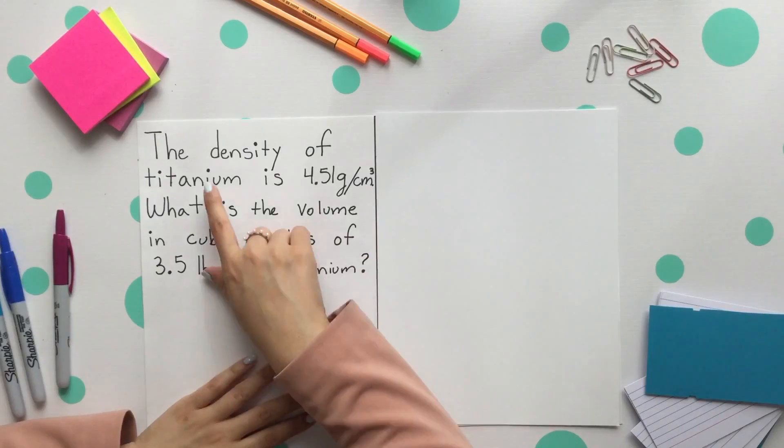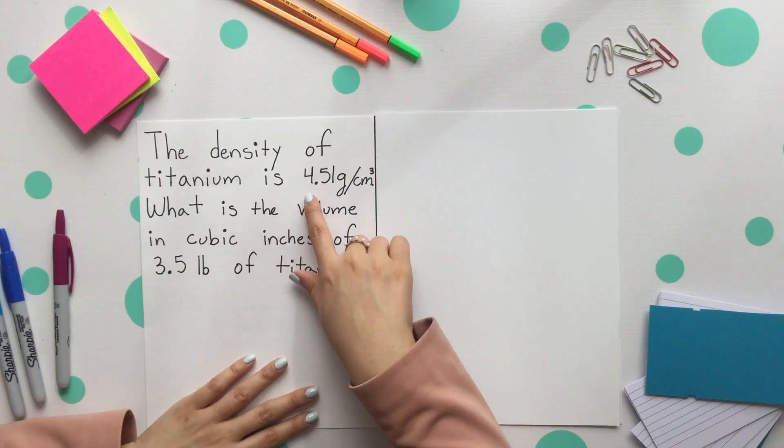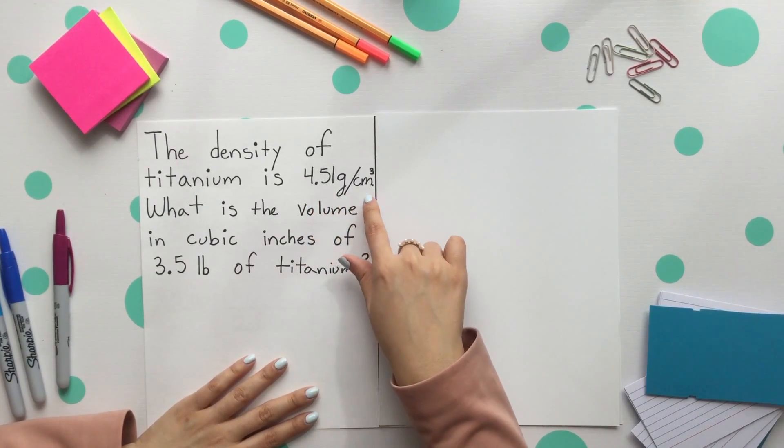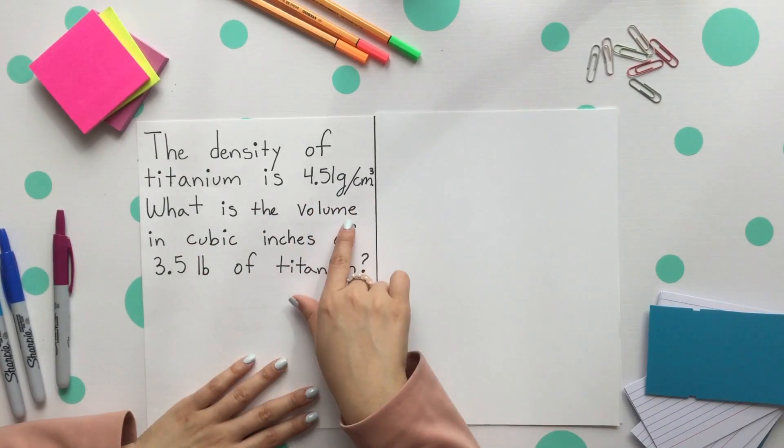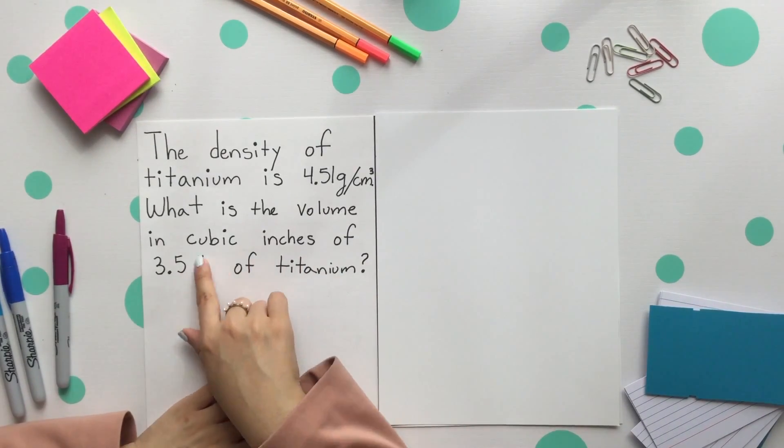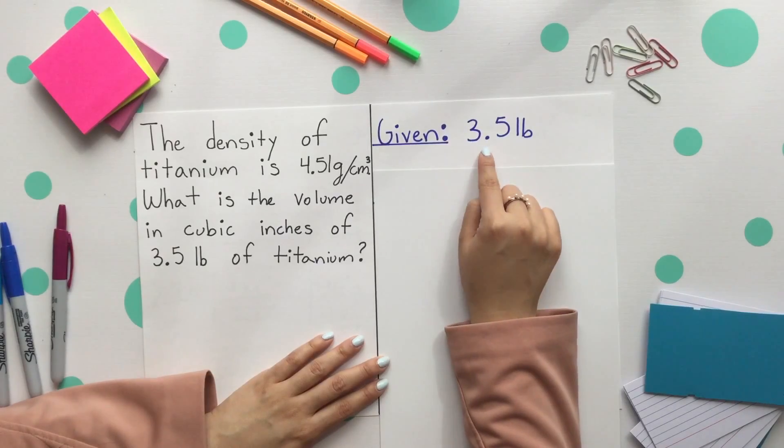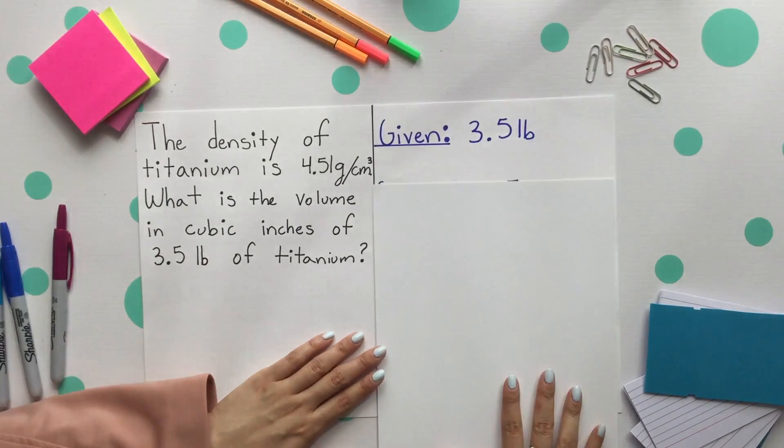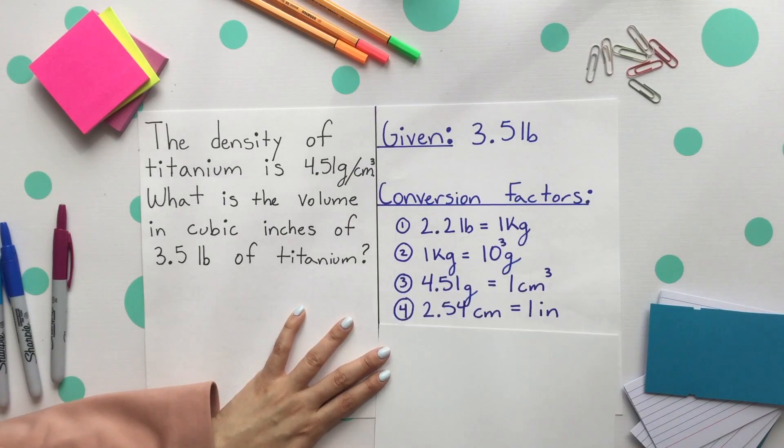Let's incorporate density and dimensional analysis. The density of titanium is 4.51 grams per cubic centimeter. What is the volume in cubic inches of 3.5 pounds of titanium? Start with identifying your given and your conversion factors since there are multiple in this question and what you are finding. The given is 3.5 pounds and our conversion factors, we actually have four in this case.